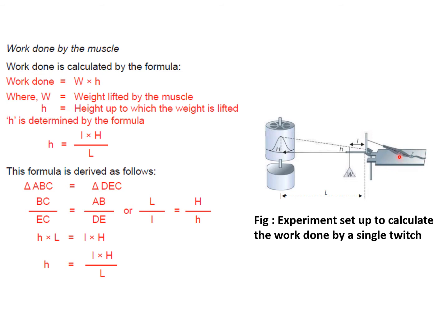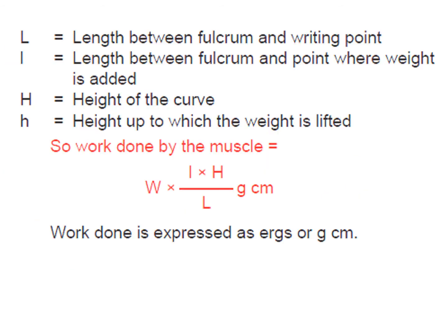This is a gastrocnemius muscle preparation where the weight is applied. Capital L is the length between the fulcrum and writing point, and small l is the length between the fulcrum and the point where the weight is added. Capital H is the height of the curve and small h is the height up to which the weight is lifted.